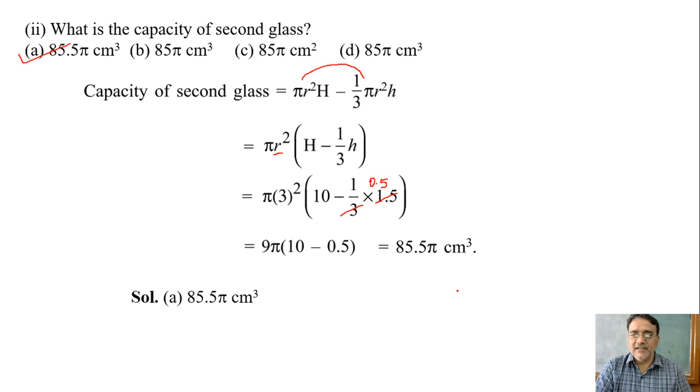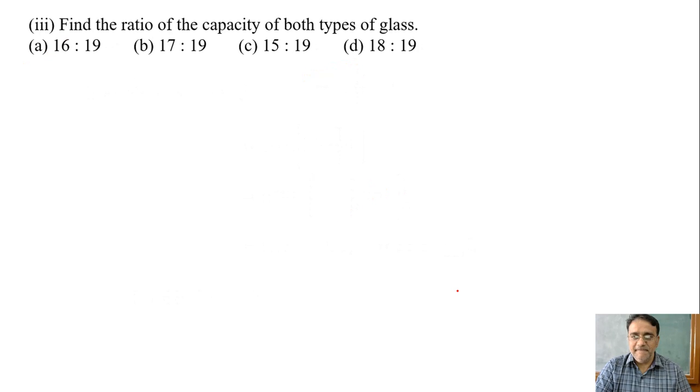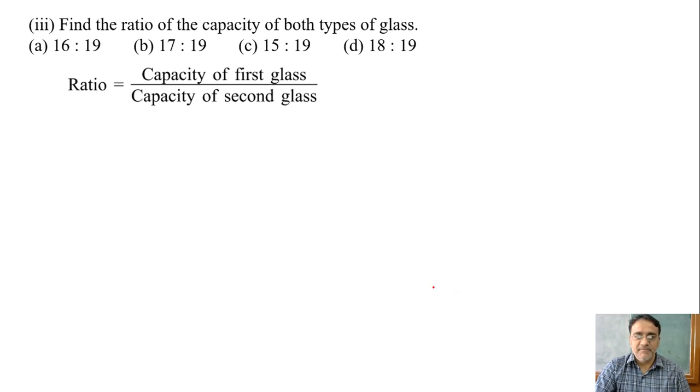Now the third question: find the ratio of the capacity of both types of glass. We already got the volumes of both, so we will divide them. Capacity of first glass upon capacity of second glass: 72π upon 85.5π. If you simplify, you get 16:19. The correct option is A.